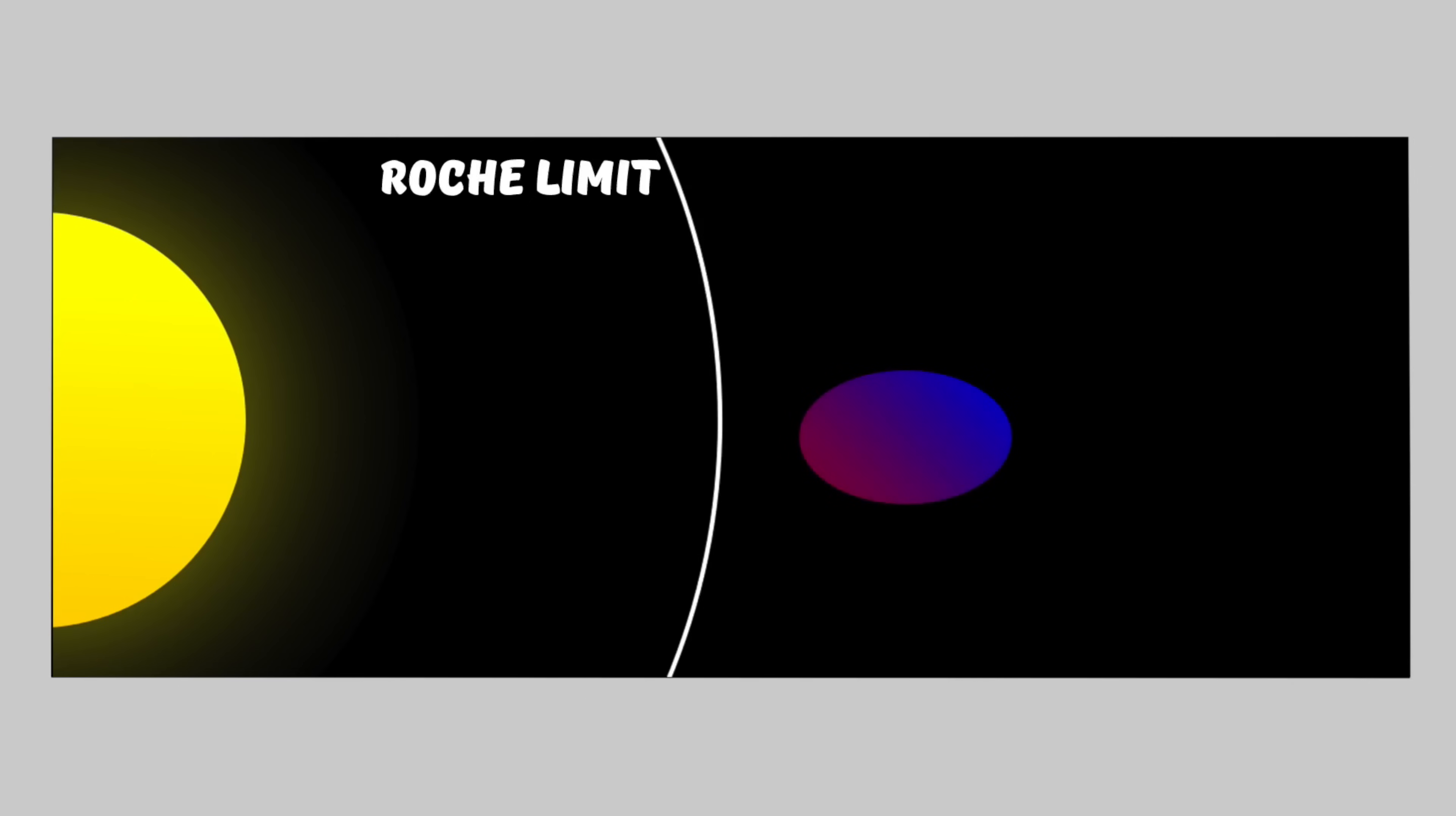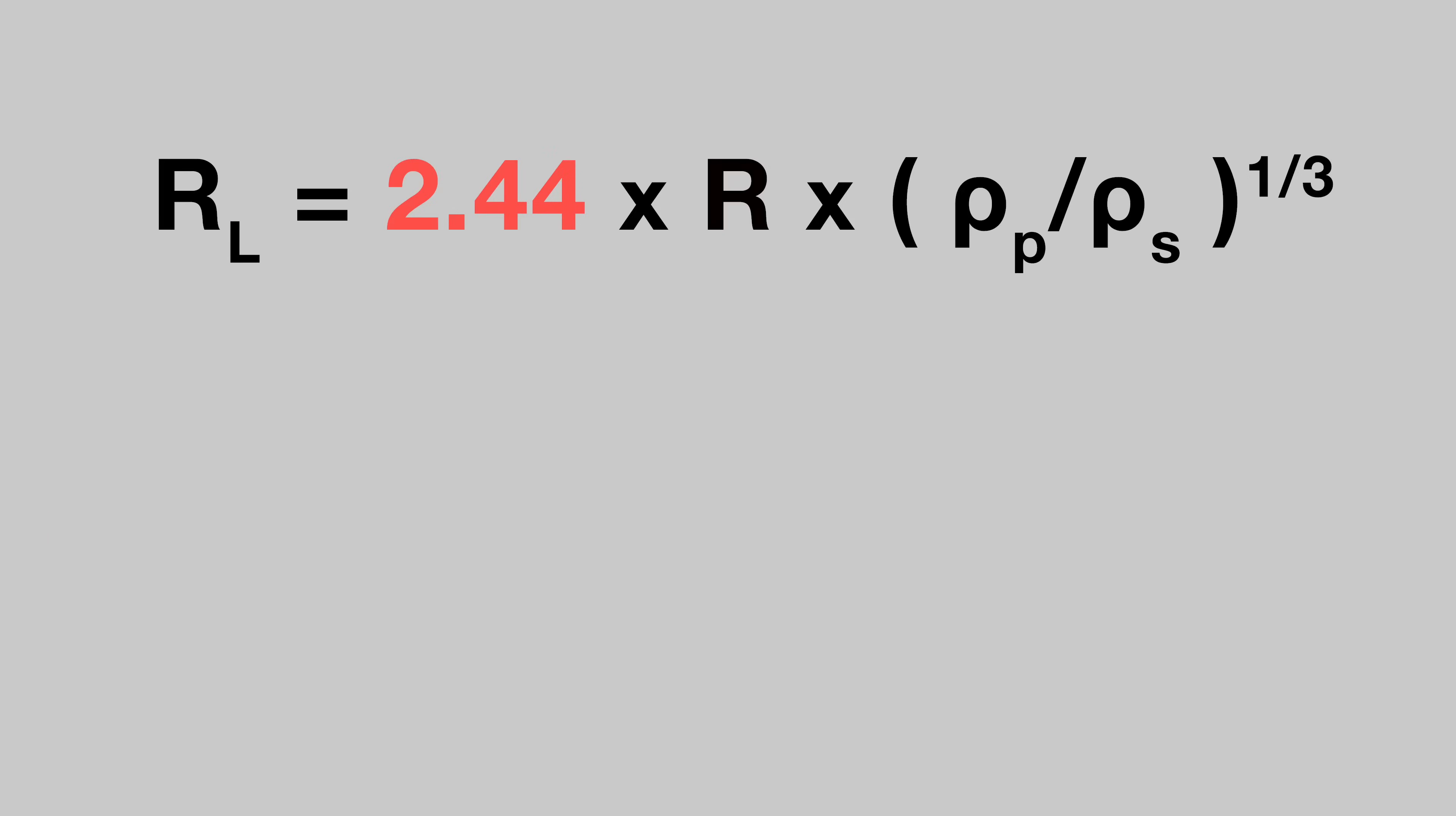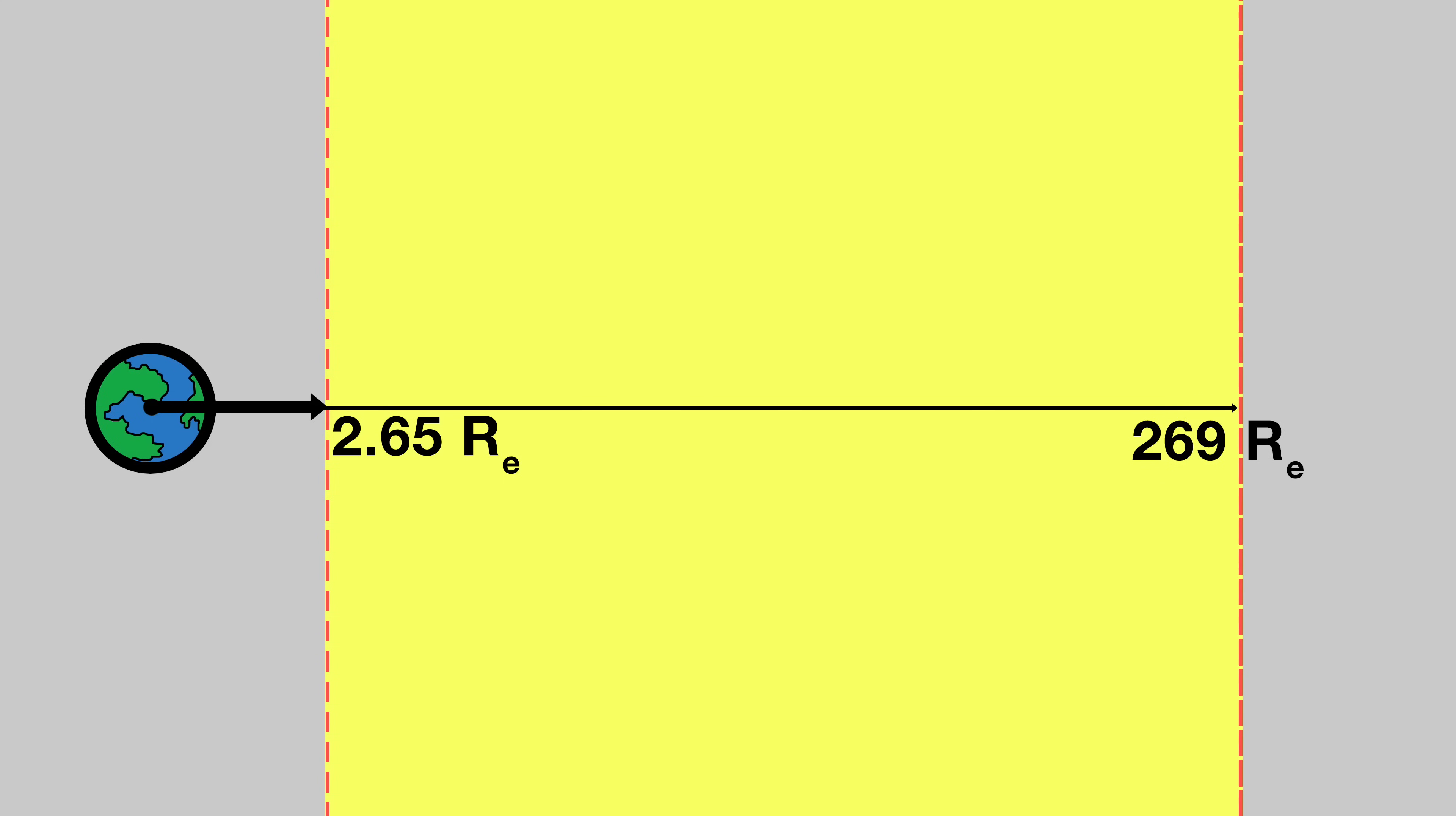That is, this planet's hill sphere extends out roughly 269 Earth radii from the centre of the planet. Those who watched my rings video will know that a moon cannot orbit arbitrarily close to a planet, so the inner limit here is given by the Roche limit, 2.44 times the radius of our planet in Earth radii, times the density of the planet divided by the density of the moon, to the third power. Again, whack the relevant numbers in and out pops 2.65. So the inner limit lies 2.65 Earth radii from the centre of our planet.